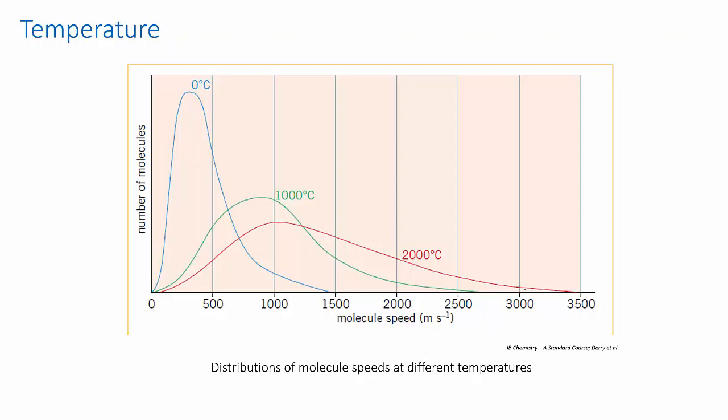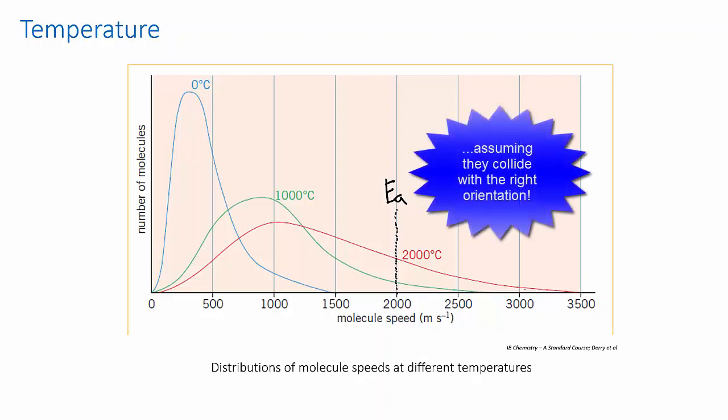Now, imagine a reaction for which the activation energy is here. Remember that each speed on this axis corresponds to a particular kinetic energy. This means that any molecules with speeds greater than this will have a successful collision, while those slower than this will not.